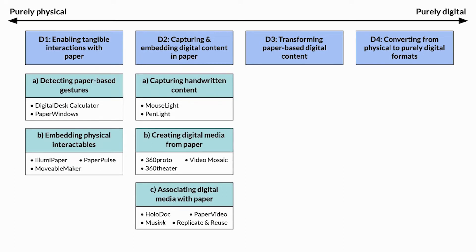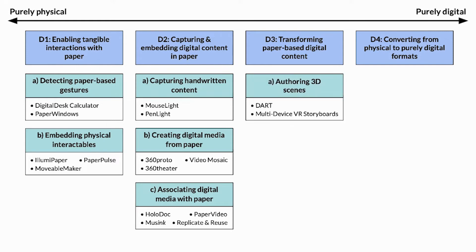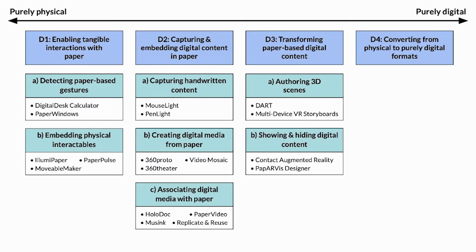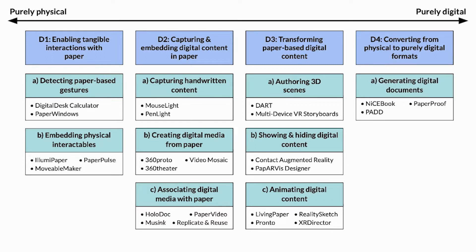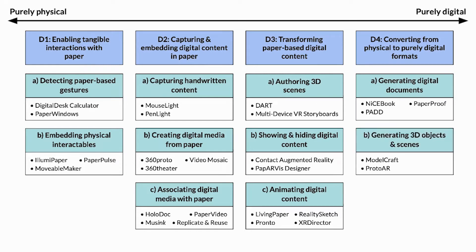The third class involves transforming paper-based digital content, including authoring techniques to move, scale, and rotate content, showing and hiding digital content, and animating content. The fourth class of interactions involves converting physical content into purely digital formats, including generating digital documents or 3D scenes from handwritten or hand-drawn content.